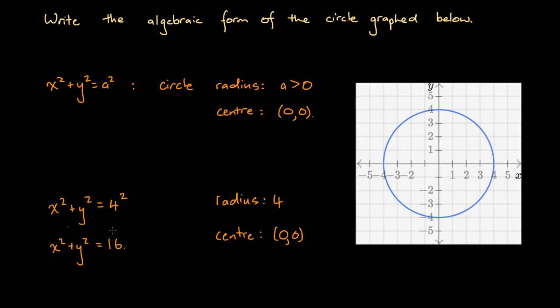This is our algebraic form of the circle. If you were asked to graph this, you would draw a graph similar to what we've got on the right-hand side here. So x squared plus y squared equals 16. That's our final answer, the algebraic form of the circle graphed below.